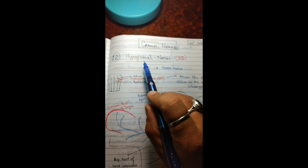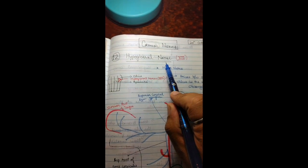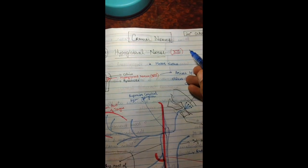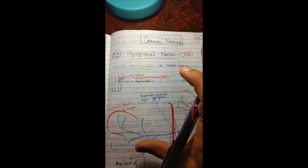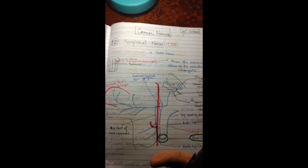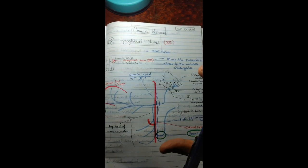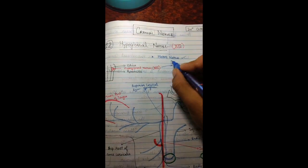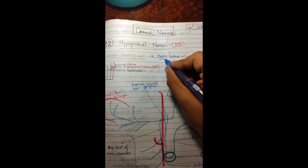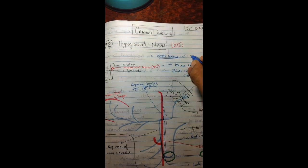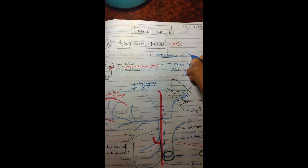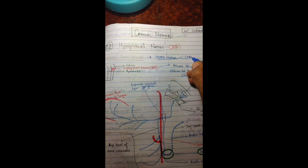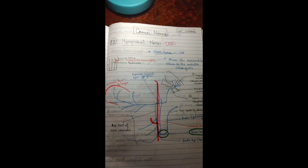We are going to study about the cranial nerves, starting with the 12th cranial nerve — the hypoglossal nerve. It is the 12th cranial nerve and it is a motor nerve. It is very important to know that the hypoglossal nerve is a motor nerve.